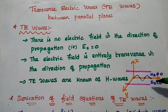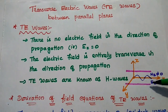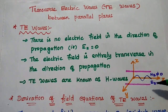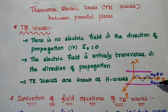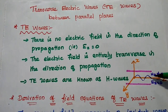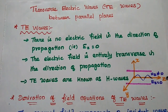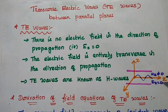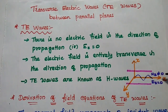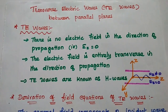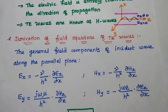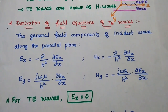TE waves have the electric field in other directions like EY, but not EZ. They have only the HZ component in the direction of propagation. TE waves are also known as H waves. Next, we are going to derive the field components of this TE wave.